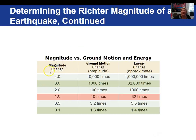Here we're looking at the change in magnitude versus ground motion change — the amplitude of the waves — versus the energy change; this is an approximate column. Going from 0.5 to 1.0 magnitude gives ten times greater amplitude and 32 times more energy released. Going from magnitude 1 to 3.0 increases the wave amplitude a thousand times — that's 10 × 10 × 10 — and would be a 32,000-time increase in energy.